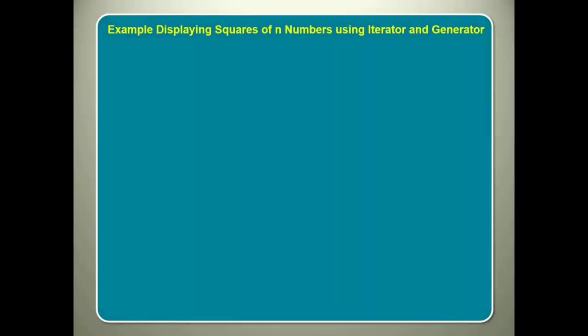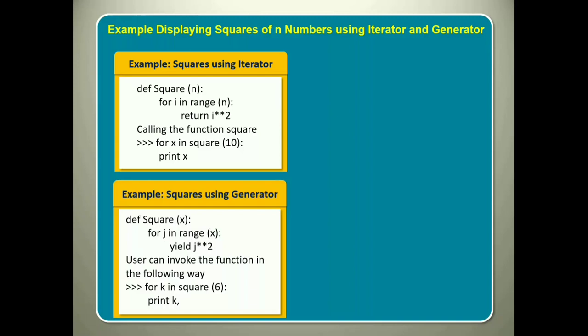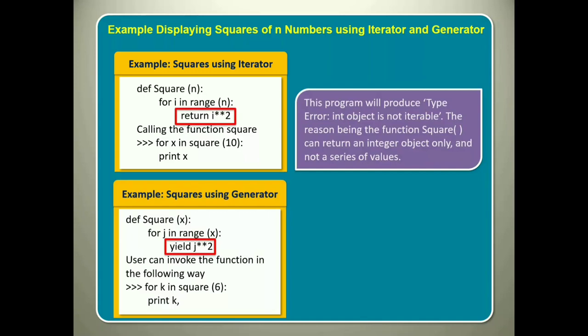Here is an example that displays squares of n numbers using iterator and generator. You can invoke the function using generator function in the following way. This can also be done by using iterator. You need to replace yield with return. Here is the code. This program will produce type error: Int object is not iterable. The reason being the function square can return an integer object only and not a series of values.